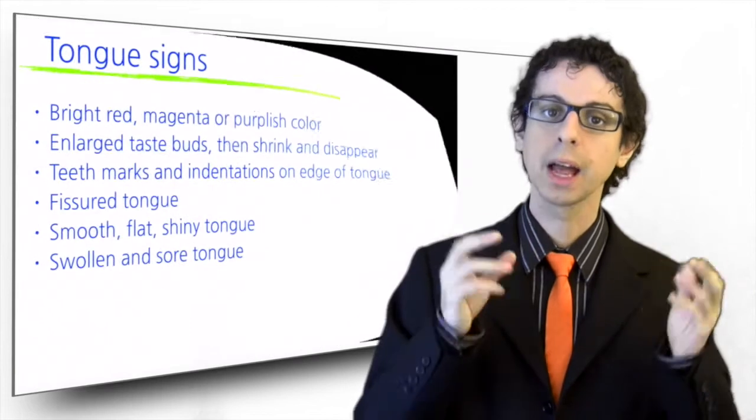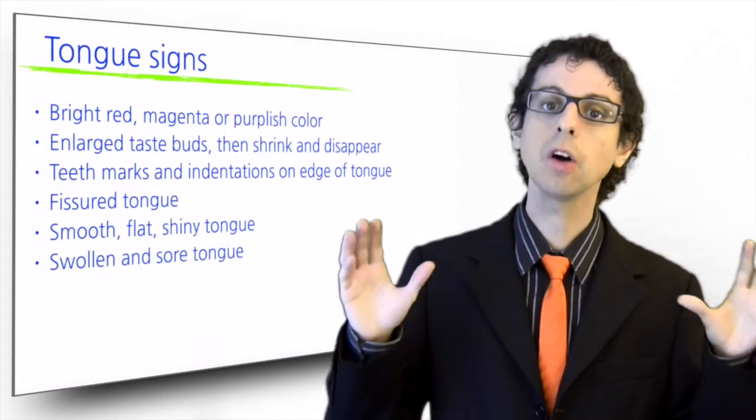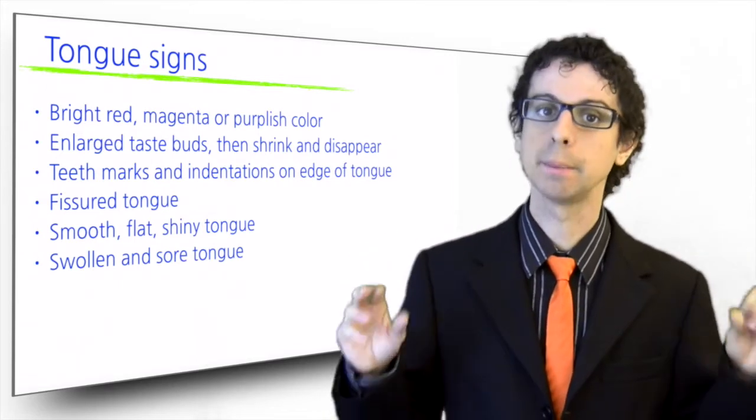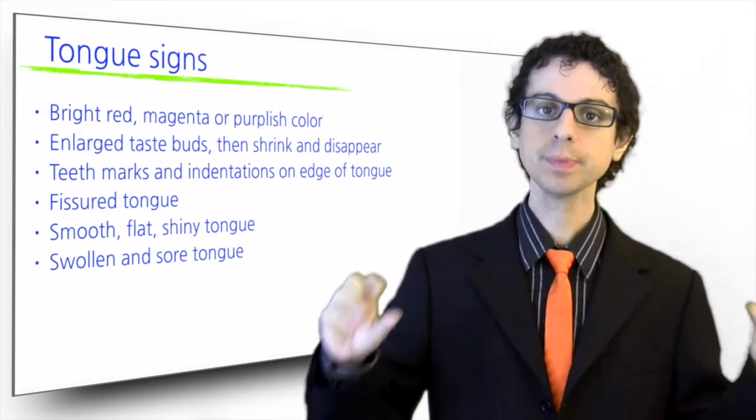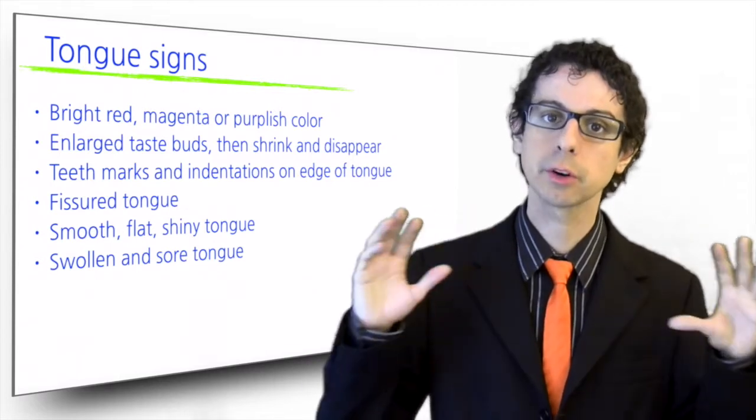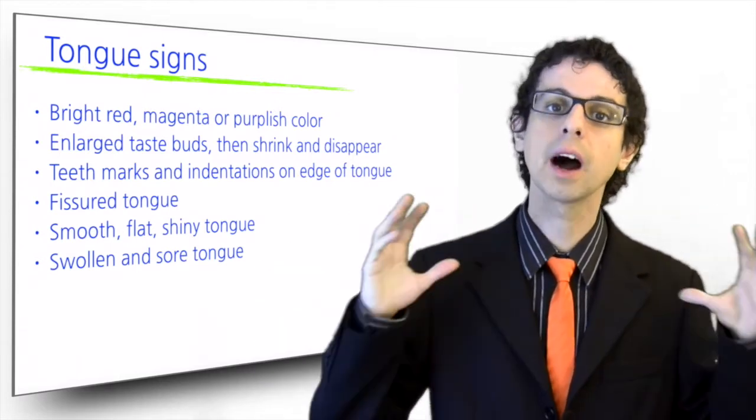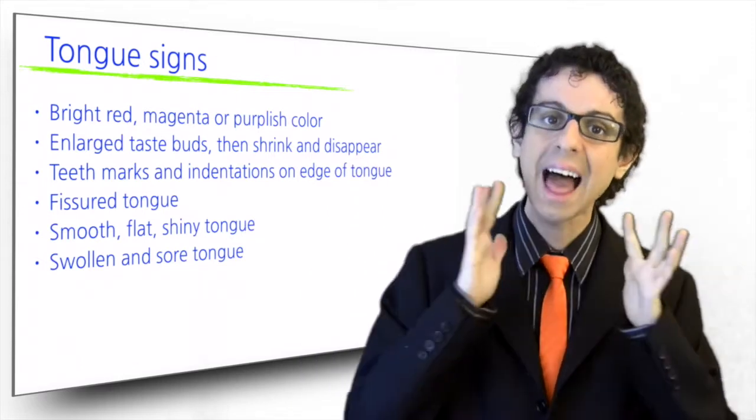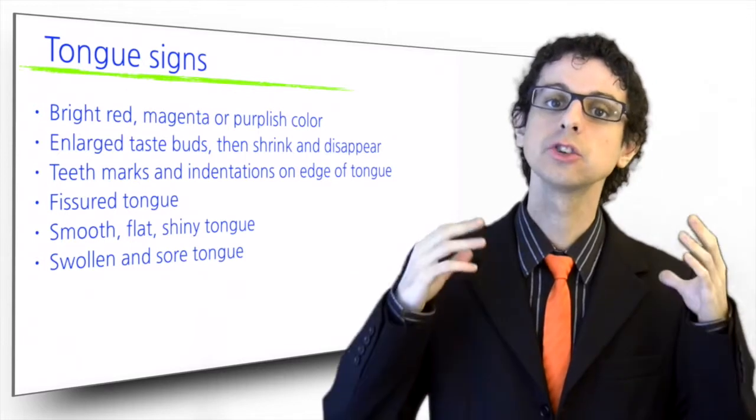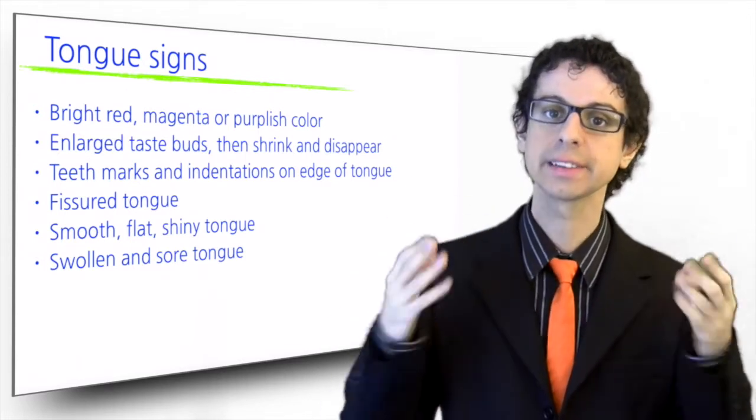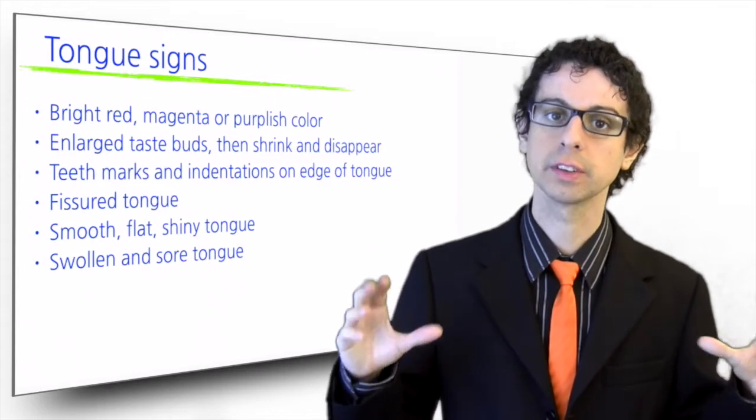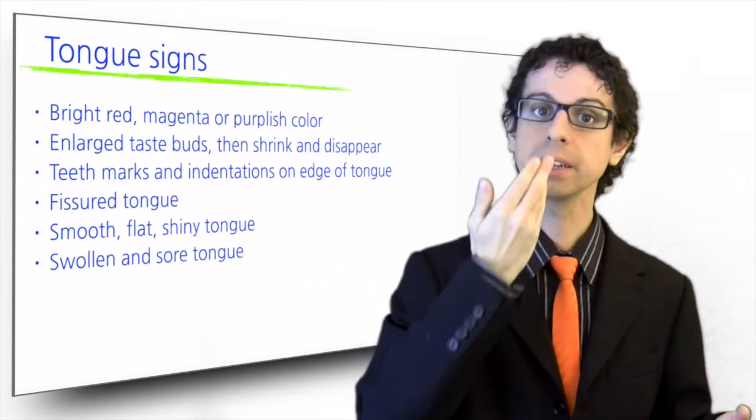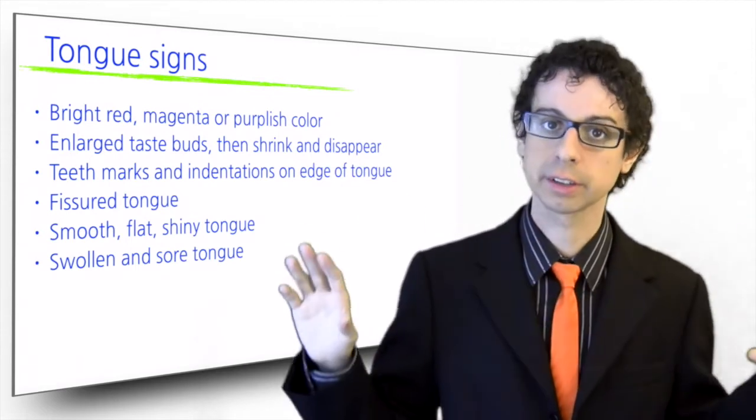Let's start with our tongue. B vitamin deficiencies often affect the tongue color. From pink, it becomes bright red, magenta or purplish. Taste buds, normally small and uniformly distributed, become enlarged at first and then they shrink until they are not visible anymore. The edge of the tongue is not smooth but it shows marks and indentations left by the teeth. The tongue surface is not smooth either but has fissures, at first a big vertical fissure right in the middle, then all over its surface.